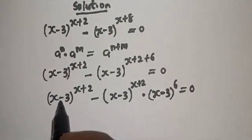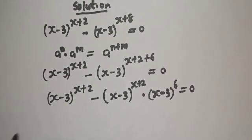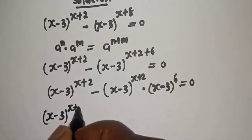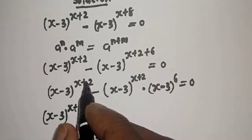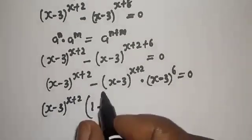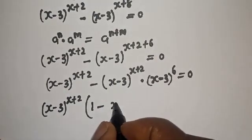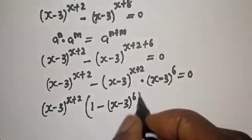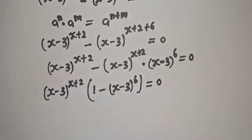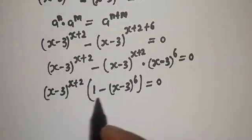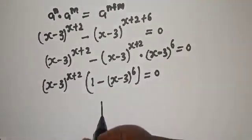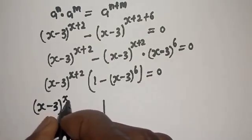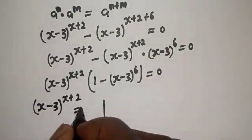From both sides, something is common. x minus 3 raised to the power x plus 2 is common. Factoring it out gives x minus 3 raised to the power x plus 2 as a common factor, equal to 0.